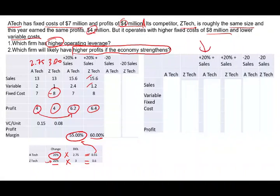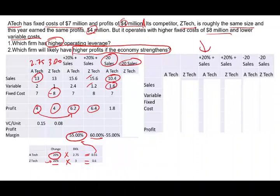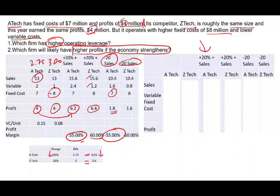Now let's look at the downturn — what happens when sales go down by 20%? For A-TAC: sales fall to $10.4 million (13 × 0.8), variable cost falls to $1.6 million, fixed cost stays the same, and profit drops to $1.8 million — a 55% reduction. For Z-TAC, sales also drop 20% and profit goes down by 60%. Z-TAC is more affected negatively. However, both companies are quite highly leveraged relative to variable cost in this example.